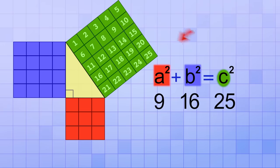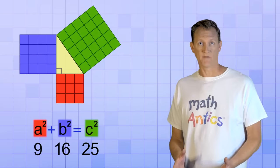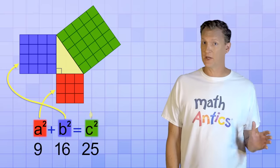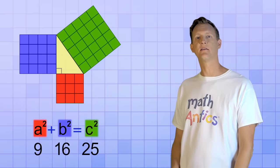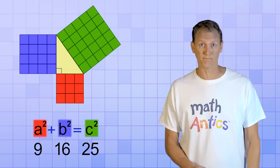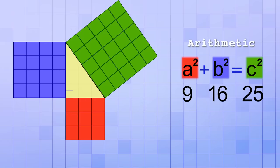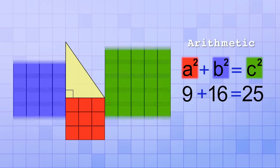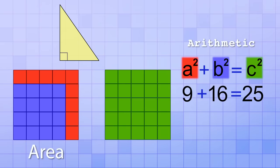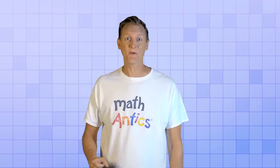Now that you can see how the arithmetic parts of the Pythagorean Theorem are related to the geometric parts of this right triangle, let's check to see if the theorem is really true. On the arithmetic side, if you add up a squared and b squared, they really do equal c squared, because 9 plus 16 equals 25. And with a little rearranging of our unit squares, you can see that the area of the squares formed by the two legs really does equal the area of the square formed by the hypotenuse.